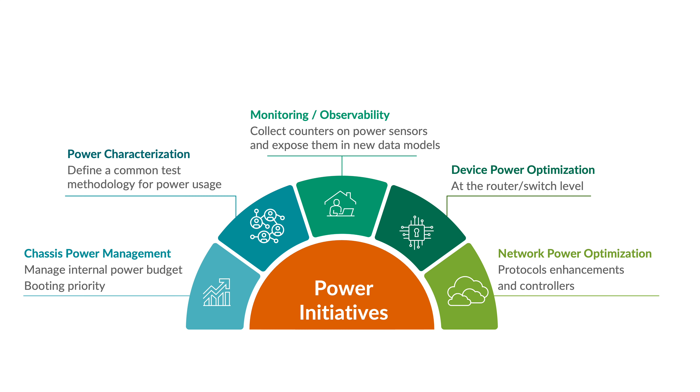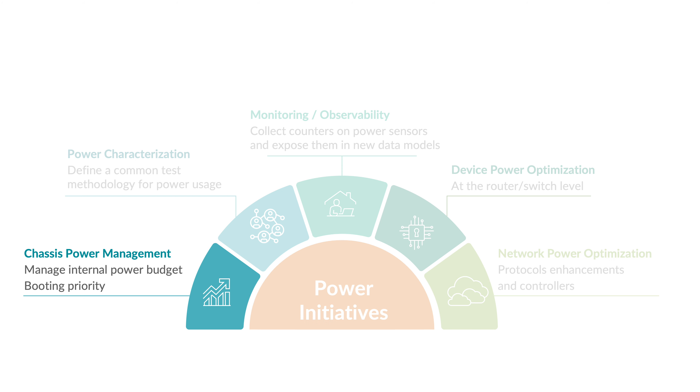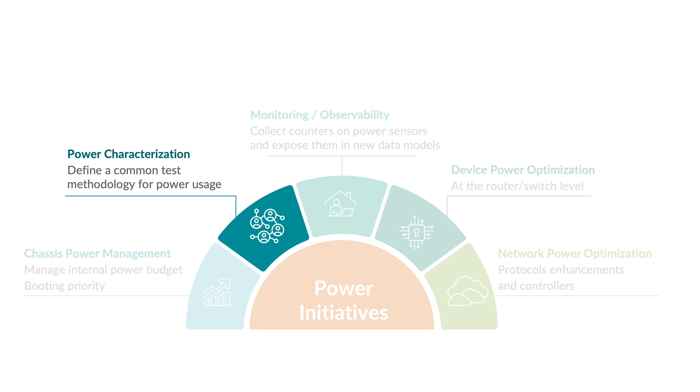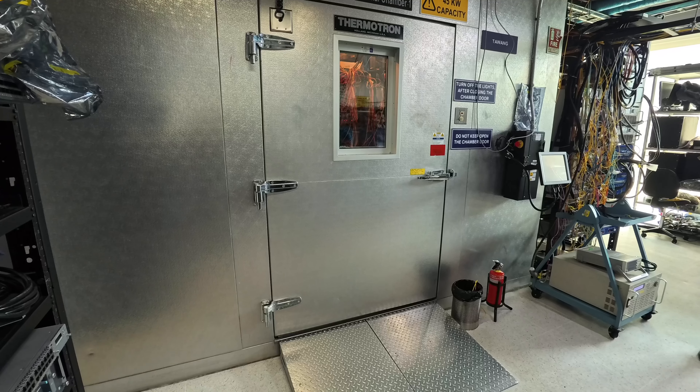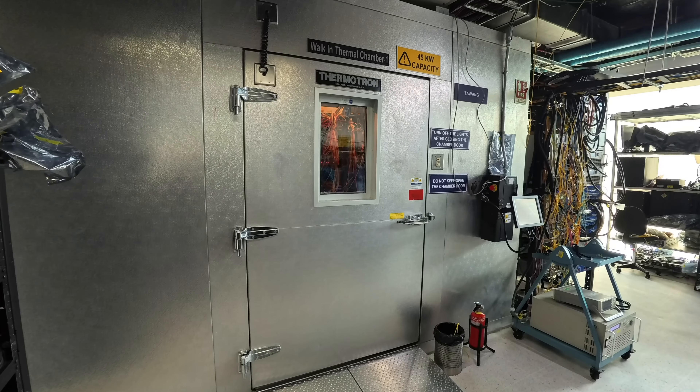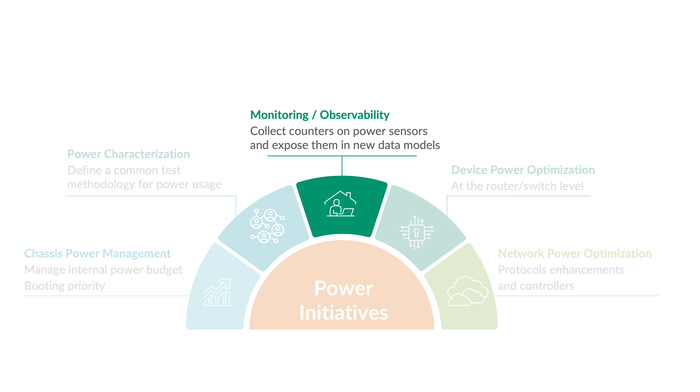There are actually multiple initiatives related to power and energy in the company at the moment. To name a few: chassis power management, which is how we manage the energy budget in a modular system — based on this budget we can decide if we have enough to boot up a line card and what should be the order of priority. There is also the power characterization initiative, consisting in defining a common and consistent test methodology to measure energy across all the products in our portfolio. We also started some initiatives around monitoring and observability, to display as much energy-related information as possible through CLI, including the creation of native data models to expose all these counters.